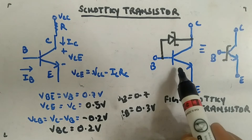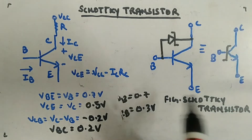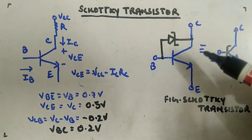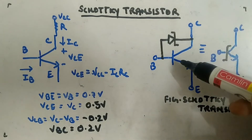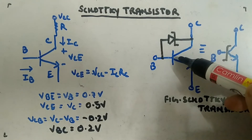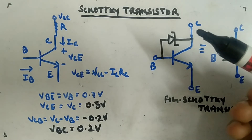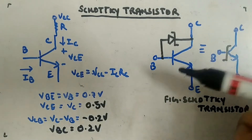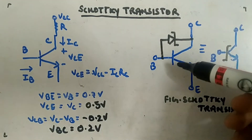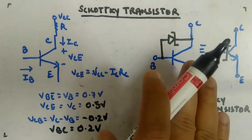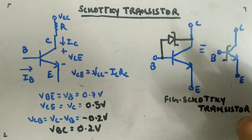The transistor tried to go into saturation, but the Schottky diode came into the picture and brought it back to active region. Depending on the BE junction, it will work in cutoff or active only. Since the transistor never goes into saturation, you are not storing excess charge inside the base. When the transistor switches from on to off or off to on, you don't have to remove charges from the base — this is called storage time — making the Schottky transistor very fast.